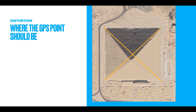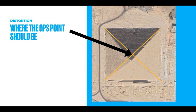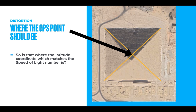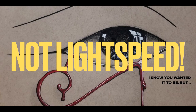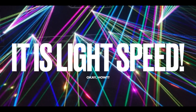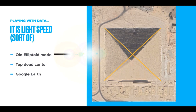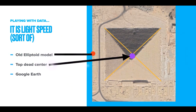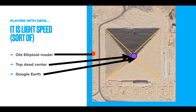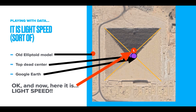We talked about the distortion. The Great Pyramid's GPS point should be right there at the exact top dead center, where the diagonals come together. So is that where the latitude coordinate matching the speed of light number is? It's not light speed at top dead center — the coordinates for that top point do not include anything like the speed of light, and yet it is light speed, sort of. The Google Earth Great Pyramid latitude is north 29.9791677. The light-speed Great Pyramid latitude is a little bit higher, a little bit farther north. If you use the speed of light, it comes out not at top dead center, but it does take you to the Great Pyramid.